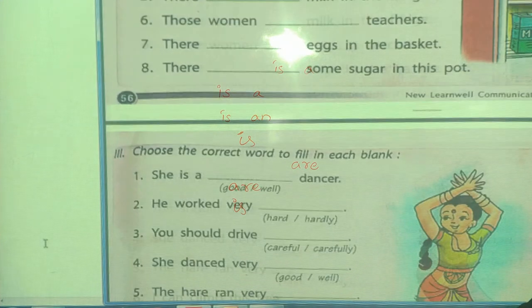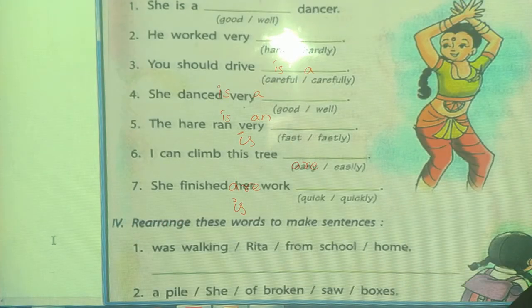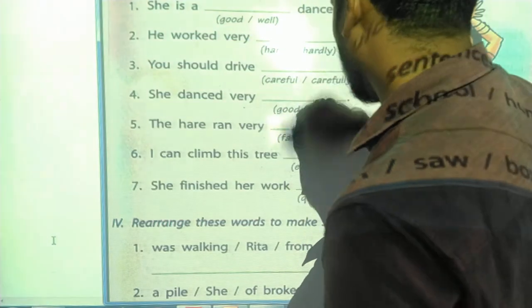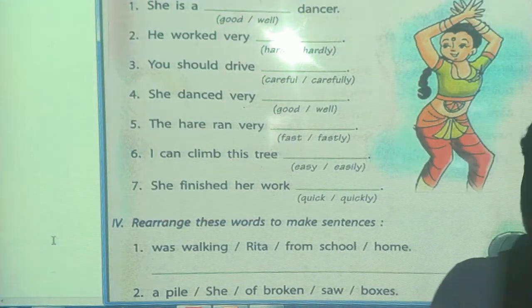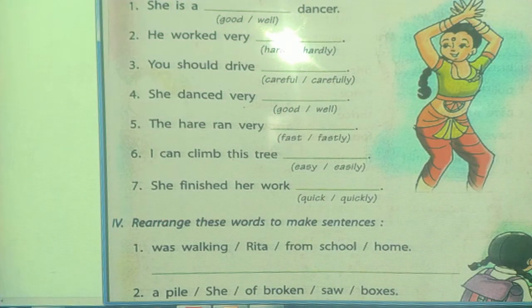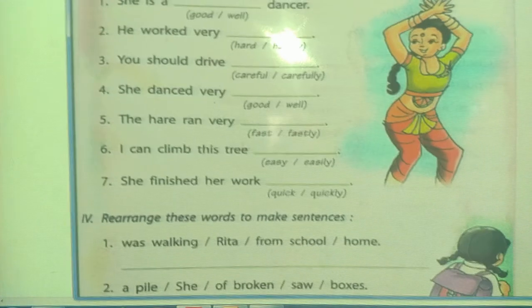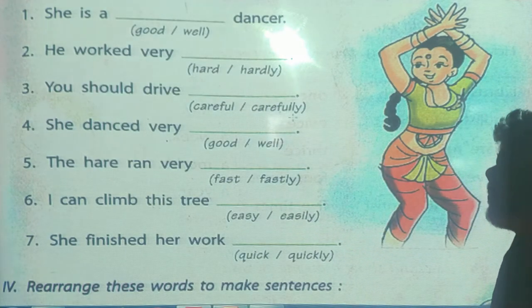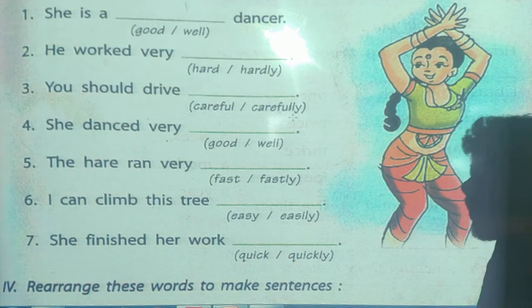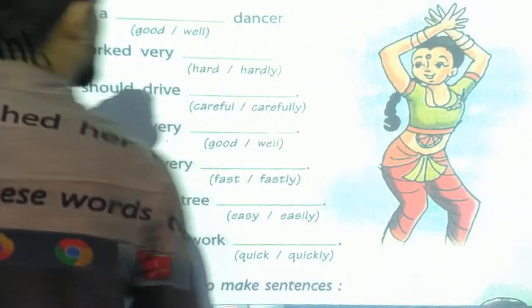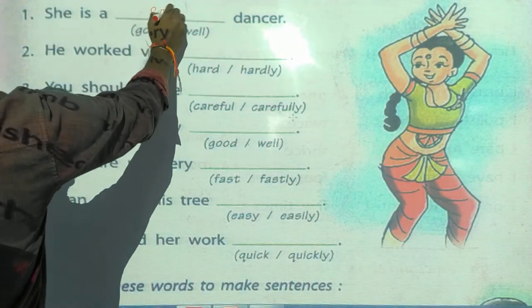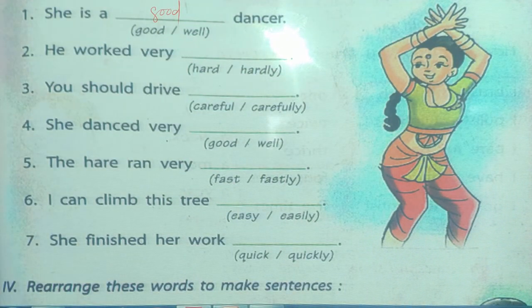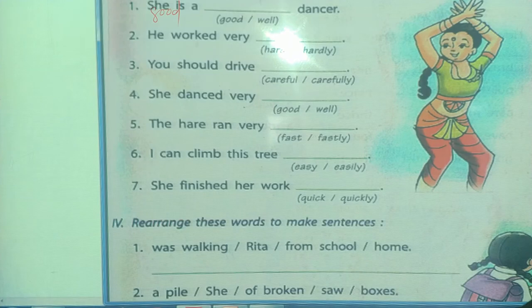We will move to the next page. Choose the correct word to fill in the blank. First: 'She is a dash dancer' — good or well? She is a good dancer.